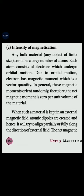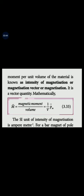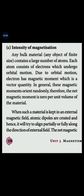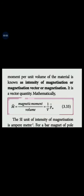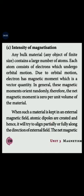There are atomic dipoles — atoms with atomic dipoles. When we apply a magnetizing field, the direction of these atomic dipoles is aligned. The net magnetic moment per unit volume of the material is called the intensity of magnetization. This is the definition of the magnetization vector.